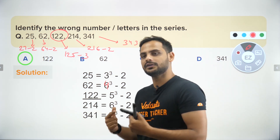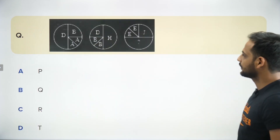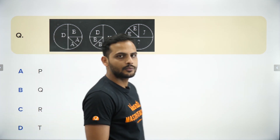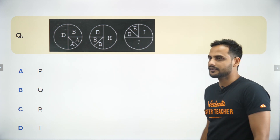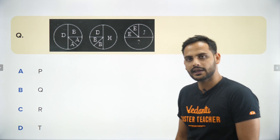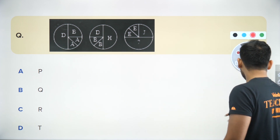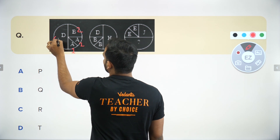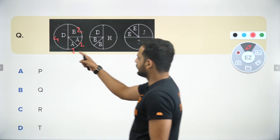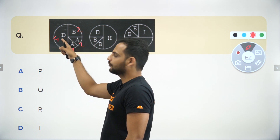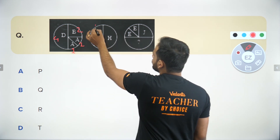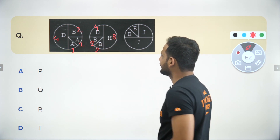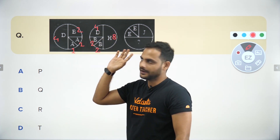The next question has letter pairs following a pattern and asks for the missing letter. When letters are given, they carry numerical values: A = 1, B = 2, D = 4, H = 8. So the pattern is 1 + 1 = 2, then 2 + 2 = 4, then 4 + 4 = 8 — doubling each time through addition.